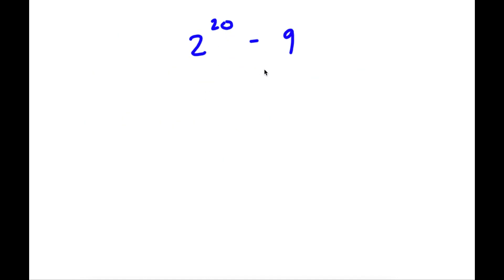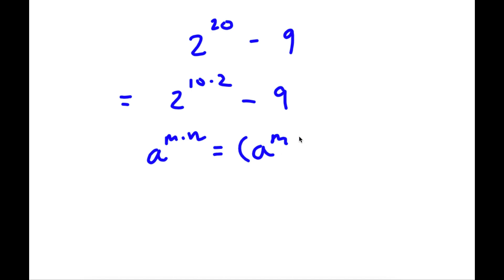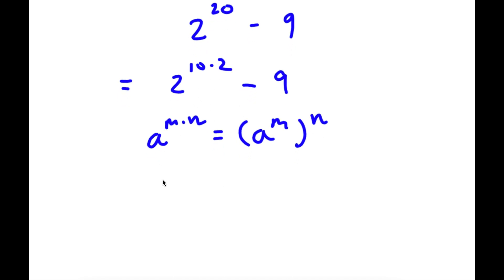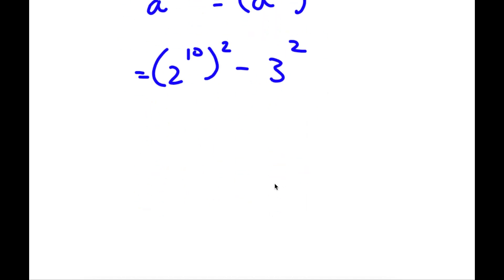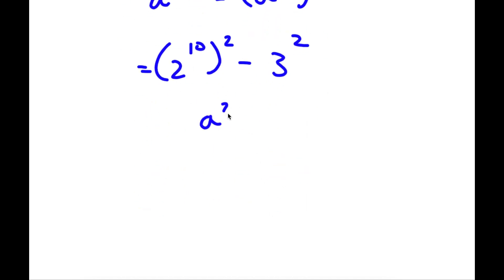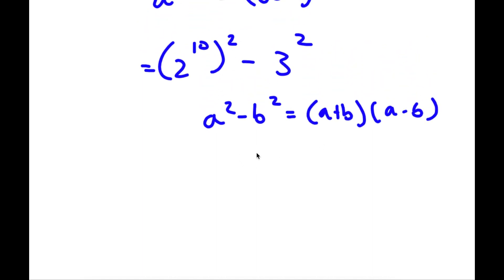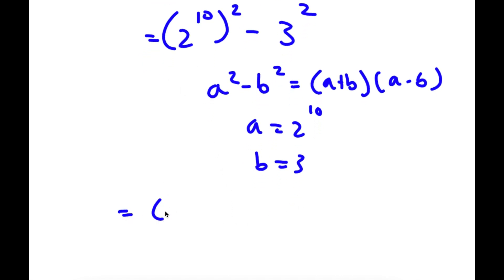Next: 2 to the power of 20 minus 9. Now 2 to the power of 20 can be rewritten as 2 to the power of 10 times 2, because 20 equals 10 times 2. Using the rule a to the power of m times n equals (a to the power of m) to the power of n, this becomes (2 to the power of 10) squared. And 9 we can rewrite as 3 squared. Using difference of squares, where a equals 2 to the power of 10 and b equals 3, I get (2 to the power of 10 plus 3) times (2 to the power of 10 minus 3).